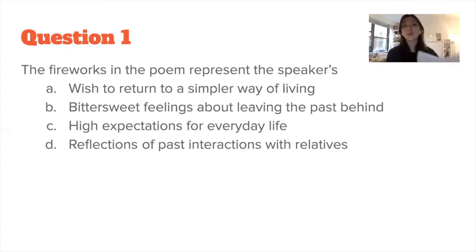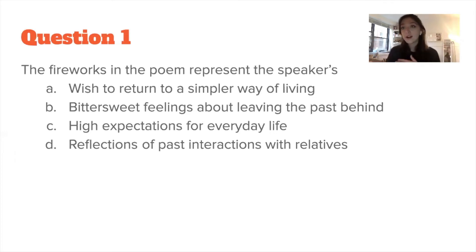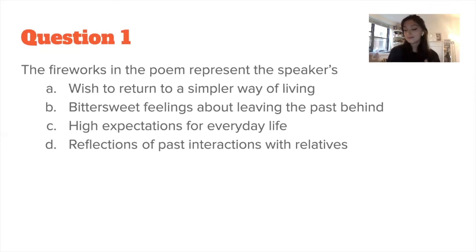Question one: the fireworks in the poem represent the speaker's — A, wish to return to a simpler way of living. Even though we look back on the past in a good way and reflect happily on the old memories and fireworks, this answer would assume the writer wants to go back and live in the country and not the city. Even though we look back on the past, it never says 'I wish I was there right now' or 'I wish I moved back there.' Unless it's very clear in the text, we can't assume. You have to go back to the text every single time — it's the only way to get the answer right.